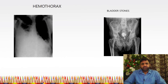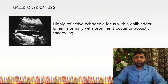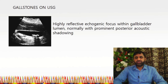This X-ray shows hemothorax on the right side of the chest. There is also an ultrasound image showing gallstones. Ultrasound abdomen is widely used to diagnose gallstone disease and is usually obtained in a fasting condition because the gallbladder is in a non-contracted phase when fasting. The image shows a highly reflective echogenic focus within the gallbladder lumen with prominent posterior acoustic shadowing.